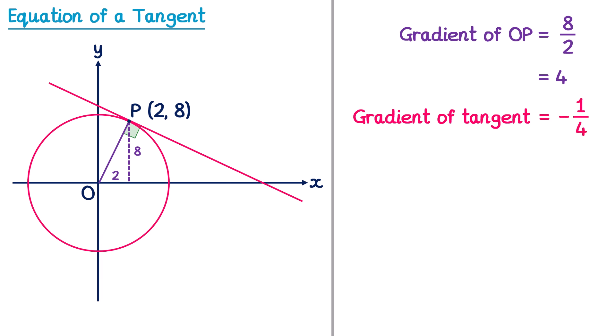What we do next is write down the general equation of a line, Y equals MX plus C. This is going to be the equation of our tangent, and we know its gradient is negative one quarter, so let's replace M with the gradient of negative one quarter. All we need to do now to complete the equation is work out the value of C, the Y intercept.